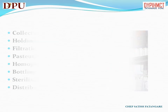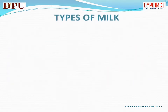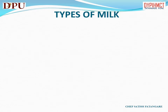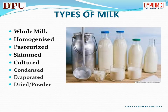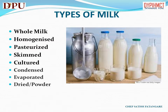In this slide we will discuss about types of milk. The types of milk are whole milk, homogenized milk, pasteurized milk, skimmed milk, cultured milk, condensed milk, evaporated milk, and dried milk or milk powder.